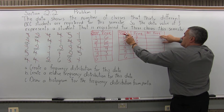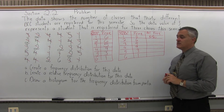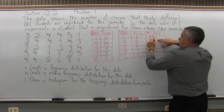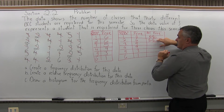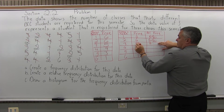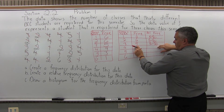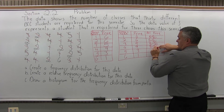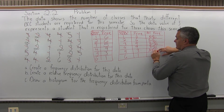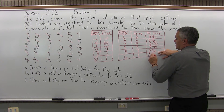The relative frequency for students taking only one class per semester would be the frequency for that class, 6, over the total of all the frequencies, which is 30. The relative frequency for students taking 2 classes would be 6 over 30. For 3 classes, it's 5 over 30. For 4 classes, it's 9 over 30. For 5 classes, 3 students, so 3 over 30. And for the last category, 6 classes in one semester, frequency of only 1, so 1 over 30.